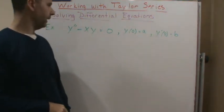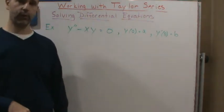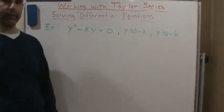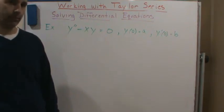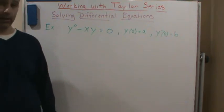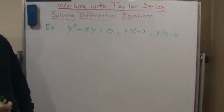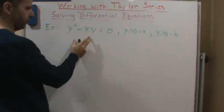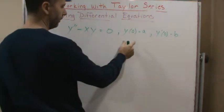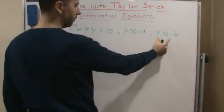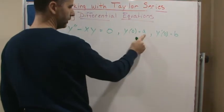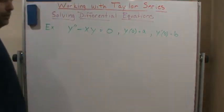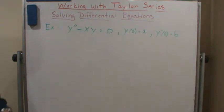We're going to do another example of solving a differential equation, except this one is not going to be solvable using the techniques we've discussed so far. So we're going to use power series to solve this one. We're given an initial value problem — this is the differential equation — and we're given the initial values: y of zero equals a, and y prime of zero equals b.